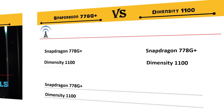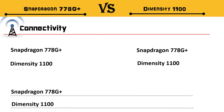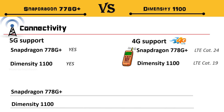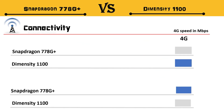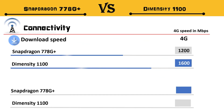Both are 5G processors. For download speed, Dimensity supports up to 1,600 Mbps, while the Snapdragon upload speed is 210 Mbps.